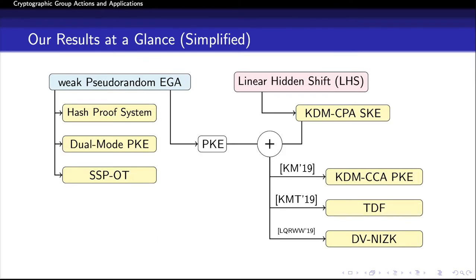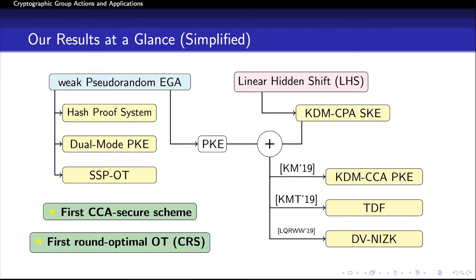In this slide, we see an overview of our results. We show that a weak pseudorandom EGA implies many powerful primitives such as hash-proof systems, dual-mode public encryption, and statistically-sender-private oblivious transfer protocols, which were not previously known from isogeny-based assumptions. From these new implications, we can construct CCA-secure encryption in the standard model and round-optimal oblivious transfer in the CRS model. We also introduce a new assumption called the linear hidden shift (LHS) assumption, which enables symmetric encryption schemes secure with respect to encryptions of functions of the secret key. For the rest of this presentation, I will talk about the implications colored in blue.